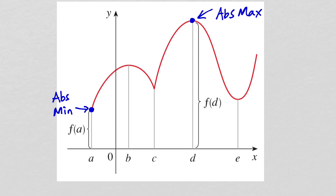However, we have some other points that are local maximums or minimums. This point right here is a local max because this point is higher than all the points immediately around it. But it is not an absolute max because it's not higher than these points over here.